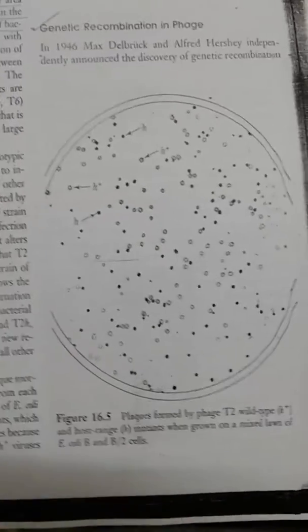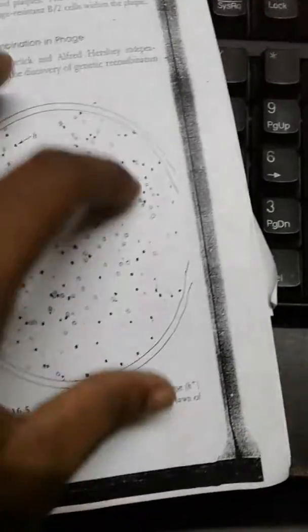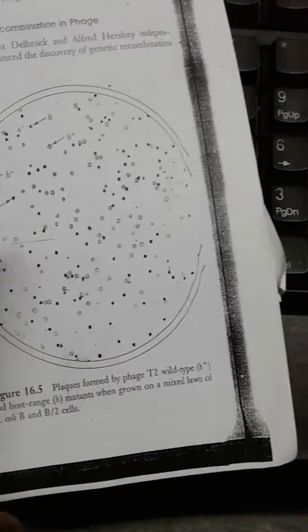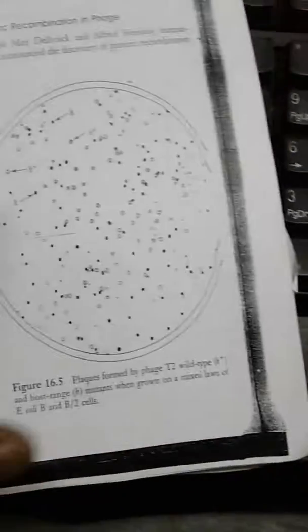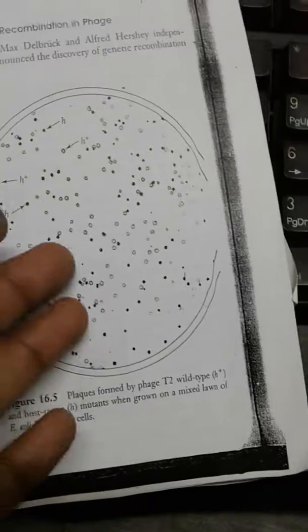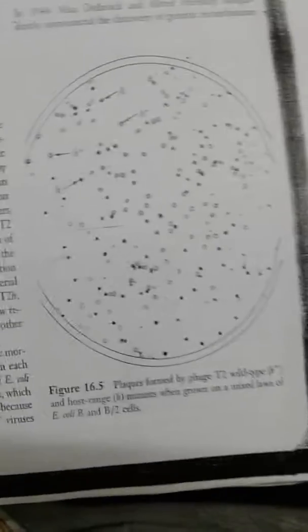When they are grown onto the plate, they form different plaques. By observing these plaques, we can say that the phage has carried out transformation or recombination.